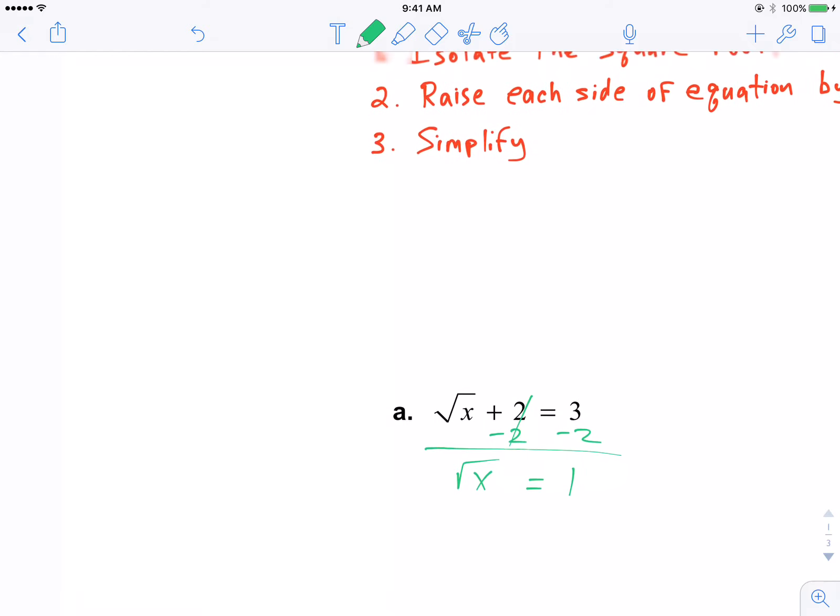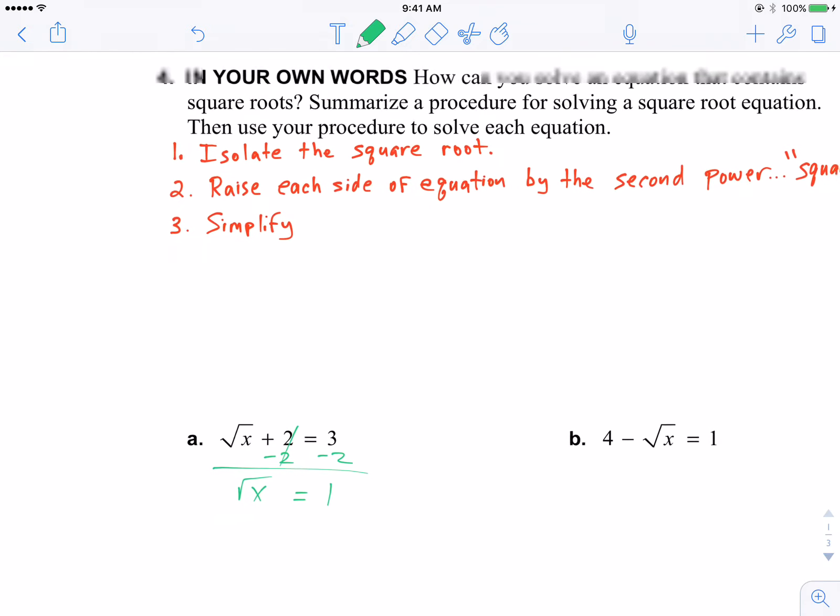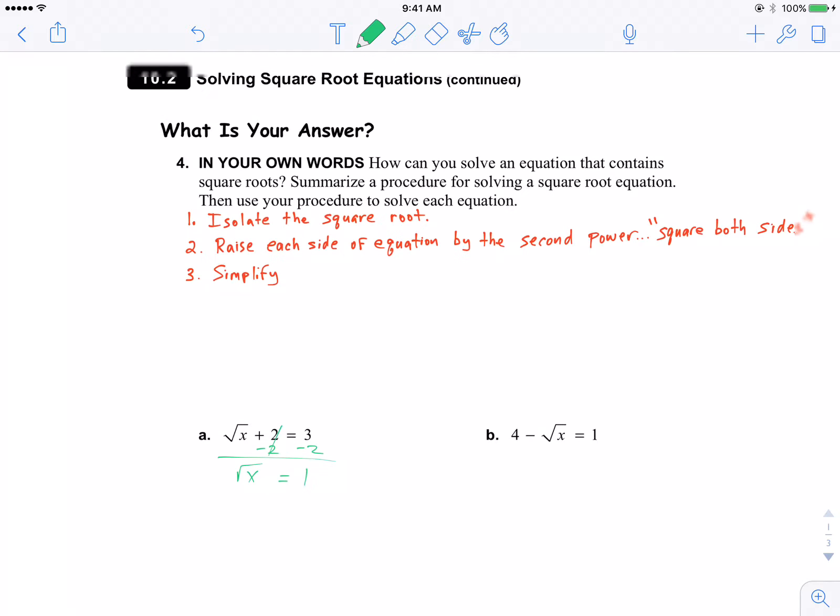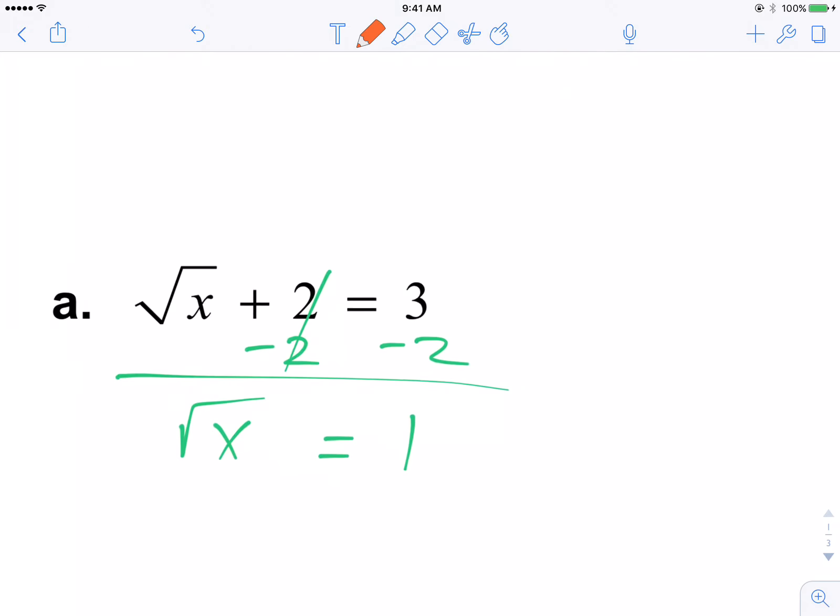Step 2 says to raise each side of the equation by the second power once you've isolated the square root. It's called squaring both sides. So let's square both sides of the equation. Take this, raise this to the second power, raise this to the second power.